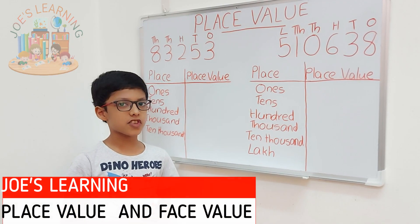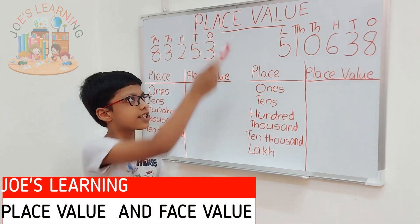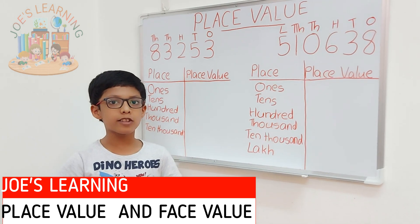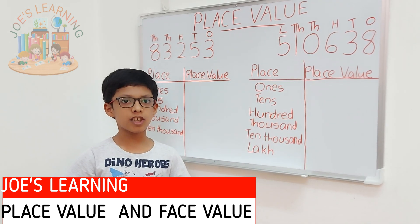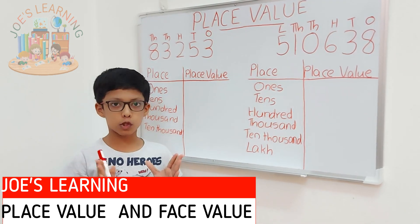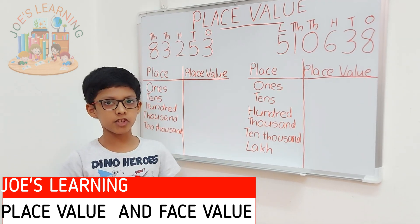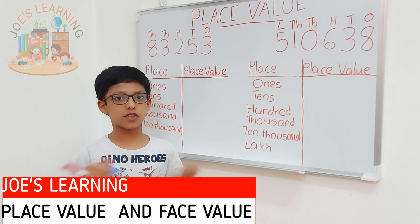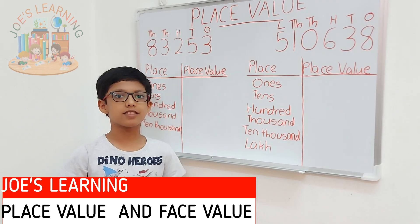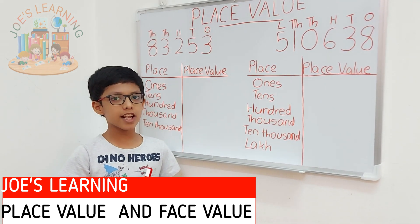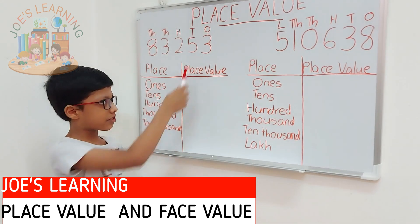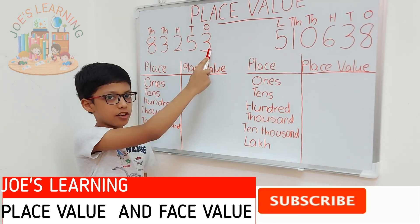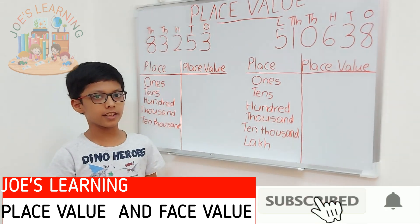First, let's understand what is Place Value. Place Value is the value of a digit according to its place or position in a number. Let me make this clear with some examples. First, let's take a look at this number, that is 83,253.